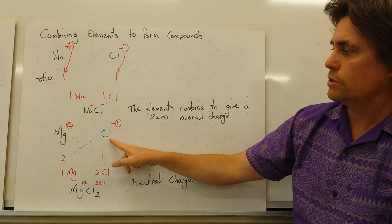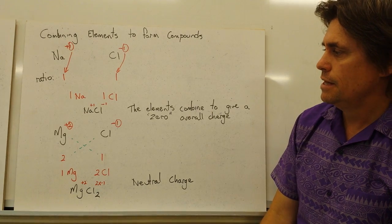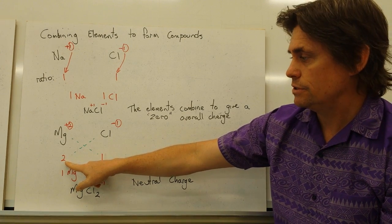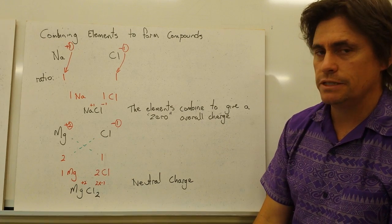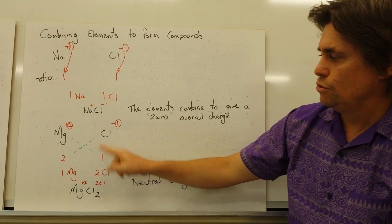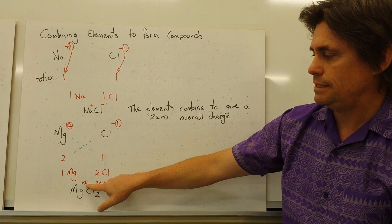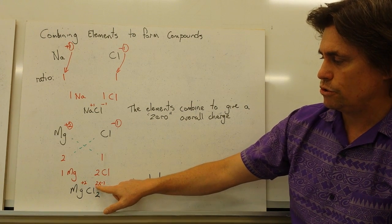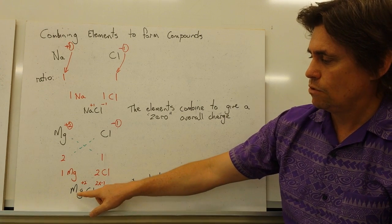Now let's look at magnesium combining with chlorine. Magnesium is in our second column, so it has a valency of plus two, while chlorine has a valency of minus one. Because magnesium loses two electrons but each chlorine only gains one, we cross-multiply the numbers: one magnesium combines with two chlorines. Our final formula is MgCl₂. We verify this by checking the charges: Mg is plus two, and two chlorines give two times minus one, which is minus two overall. Plus two and minus two balance out, confirming the formula for magnesium chloride is MgCl₂.